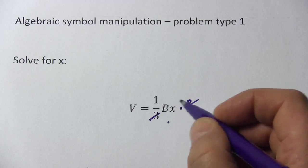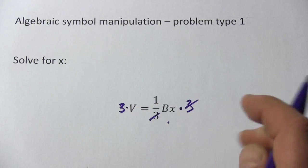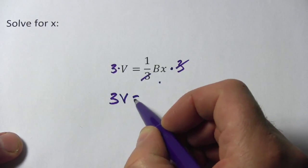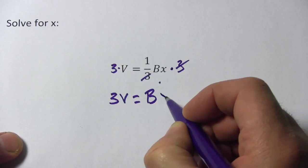But if I multiply by 3 over here, I've got to multiply by 3 over here. So we have 3V now equals B times x.